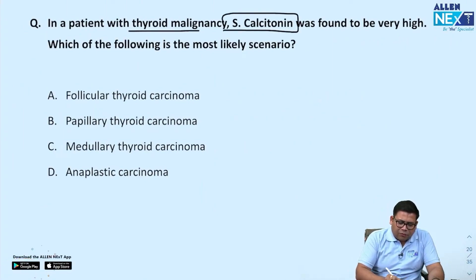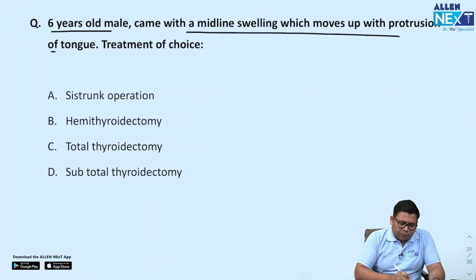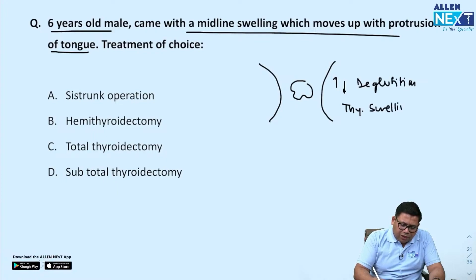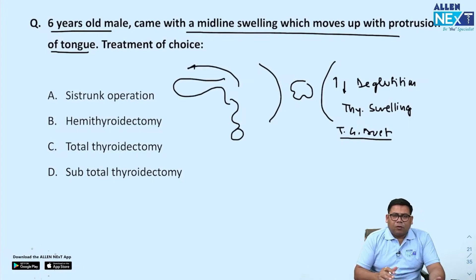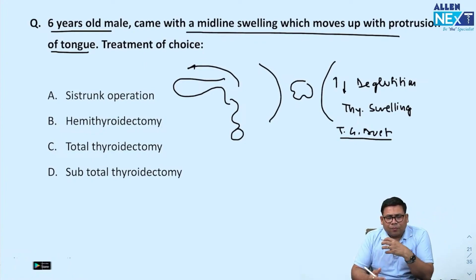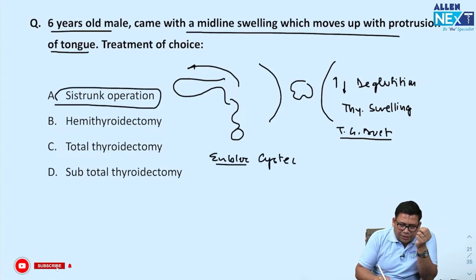A patient with thyroid malignancy and very high serum calcitonin — the answer is medullary thyroid cancer, a straightforward question. Next: a six-year-old with a midline swelling that moves with deglutition and protrusion of the tongue. Both thyroid swelling and thyroglossal duct cyst move with deglutition, but movement with tongue protrusion is specific to thyroglossal duct cyst, as its remnants are connected by a fibrous cord to the base of the tongue.